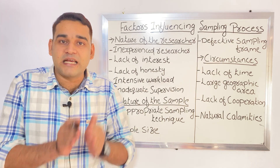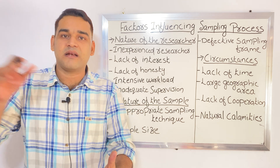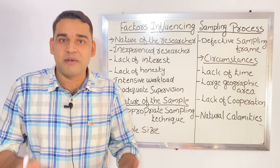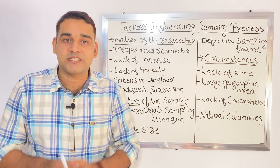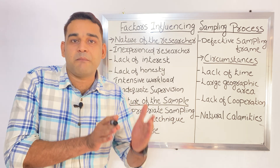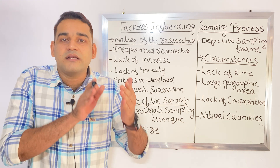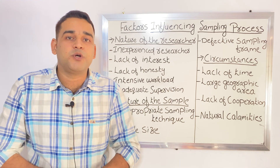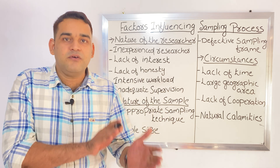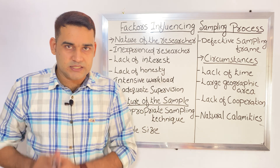Any defect in that list — for example, some non-pregnant women also appearing in the list — will cause a mistake in your study. Just imagine what will happen if your study is related to pregnant women but the sampling frame is defective. The sampling frame should be perfect. If it is defective, it will affect the sampling process.